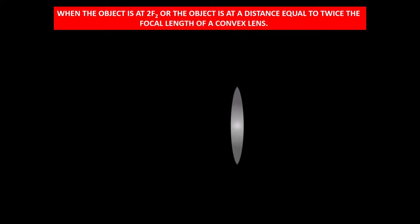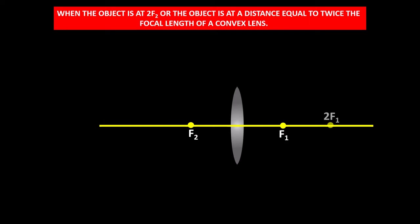Now let us move to another position: when the object is at 2f2, or at a distance equal to twice the focal length of the convex lens. Let this be the lens and principal axis, with points f1, f2, 2f1, and 2f2. Let the object be placed at 2f2.